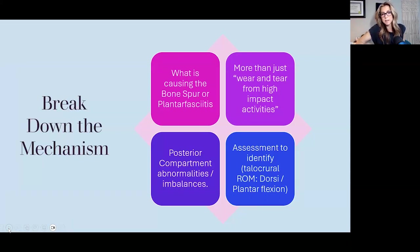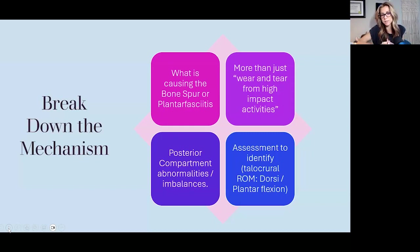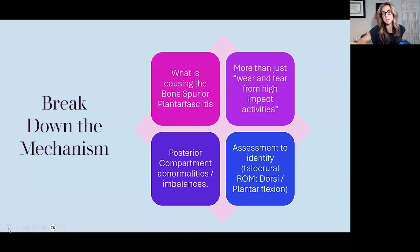Breaking down the mechanism — what is causing the bone spur or plantar fasciitis? I tend to think there's more than just wear and tear from high-impact activities. When using frequency — and even when not — the best practitioners take a global approach: identifying the talocrural joint, range of motion through the ankle, what does the knee look like, what does the hip look like? Patients with foot pain should be very transparent about any old knee or hip injuries, because those faulty mechanics have a way of finding themselves in that last link — the foot and ankle.